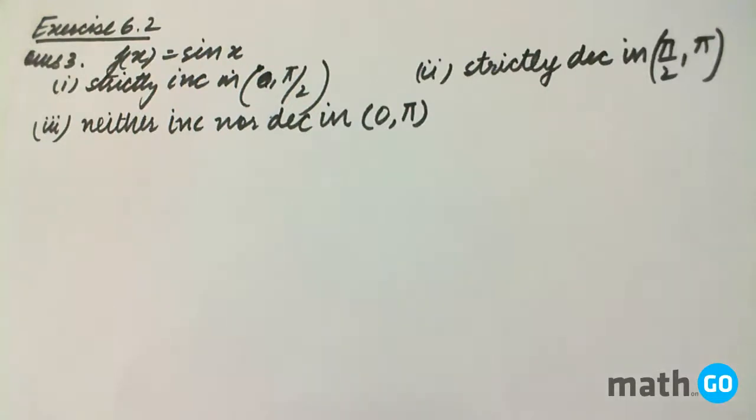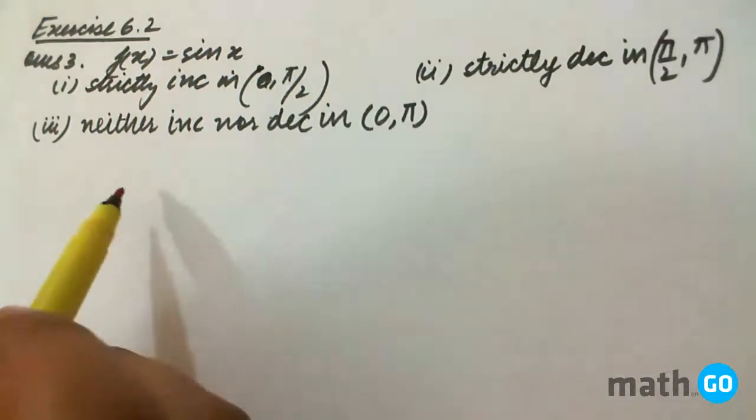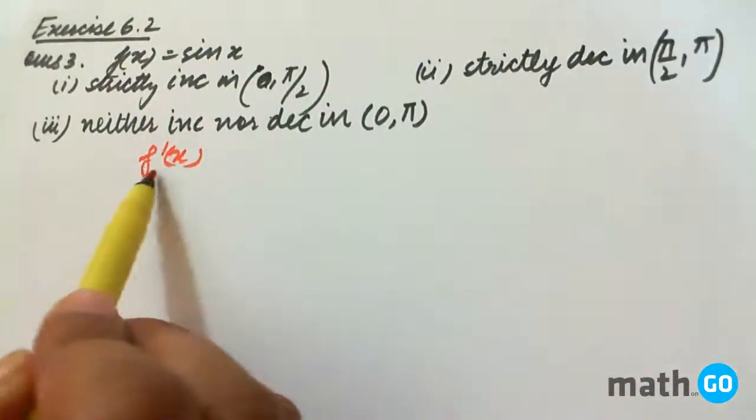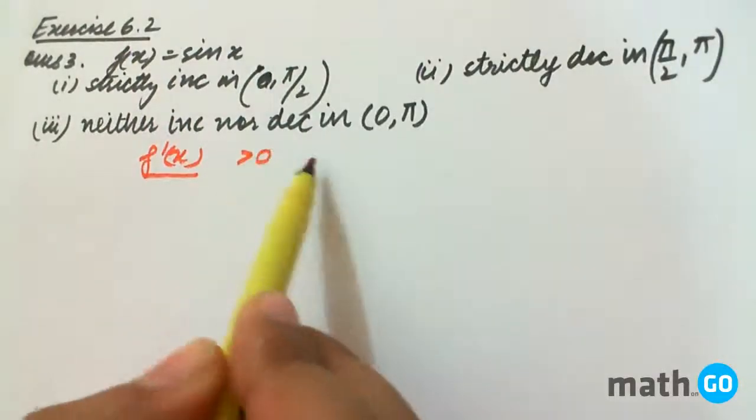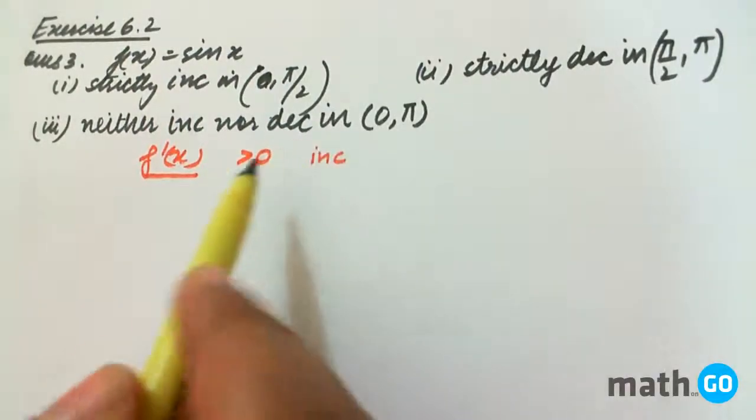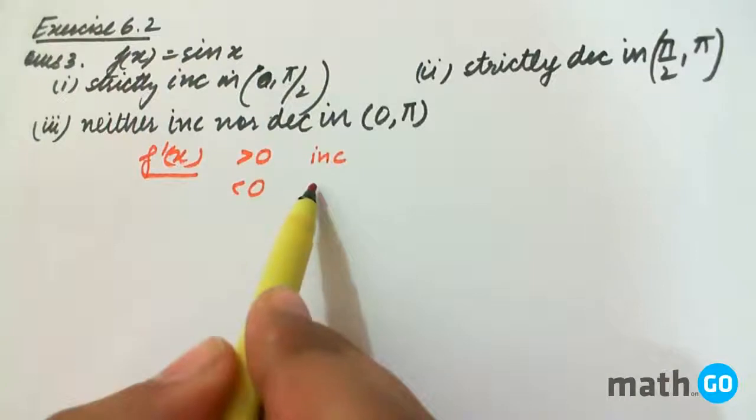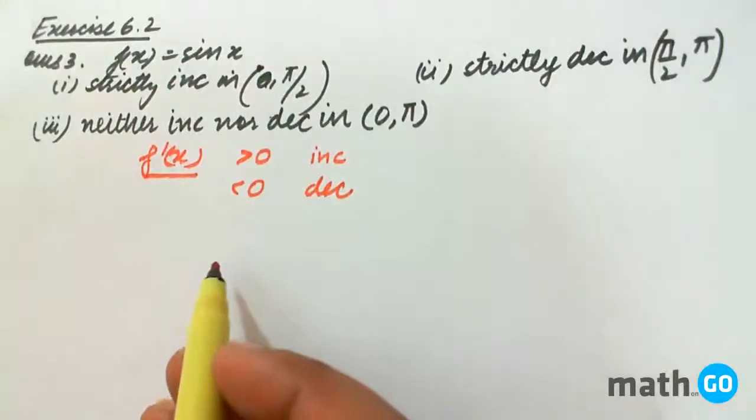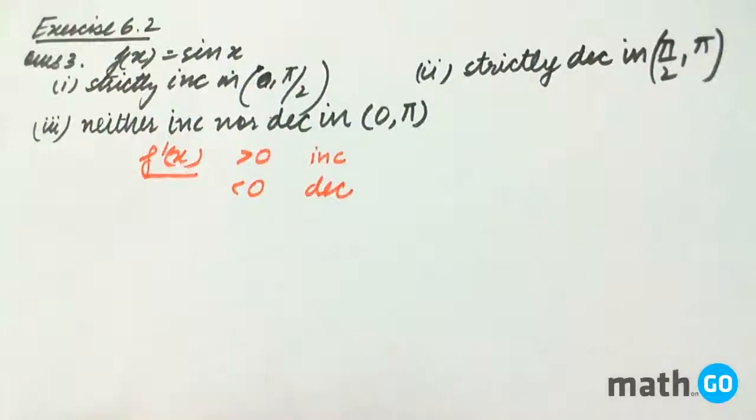If we are given a function f(x), then how do we find if it is increasing or decreasing? It is simply by f'(x). That is, if f'(x) is greater than 0, it is increasing. If it is less than 0, it is decreasing. And if it is both, then it is neither increasing nor decreasing.